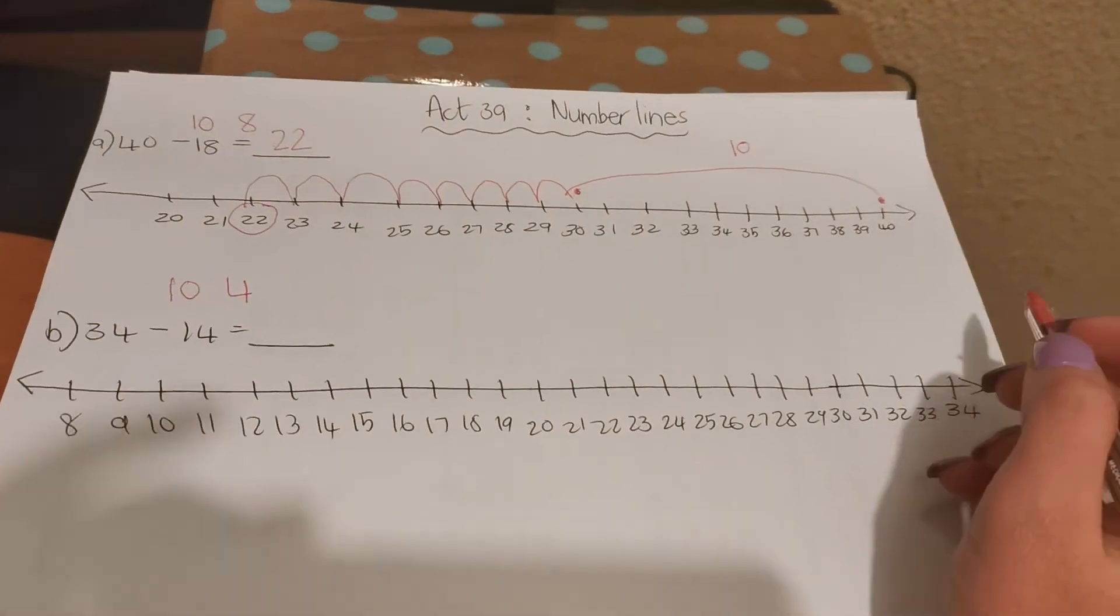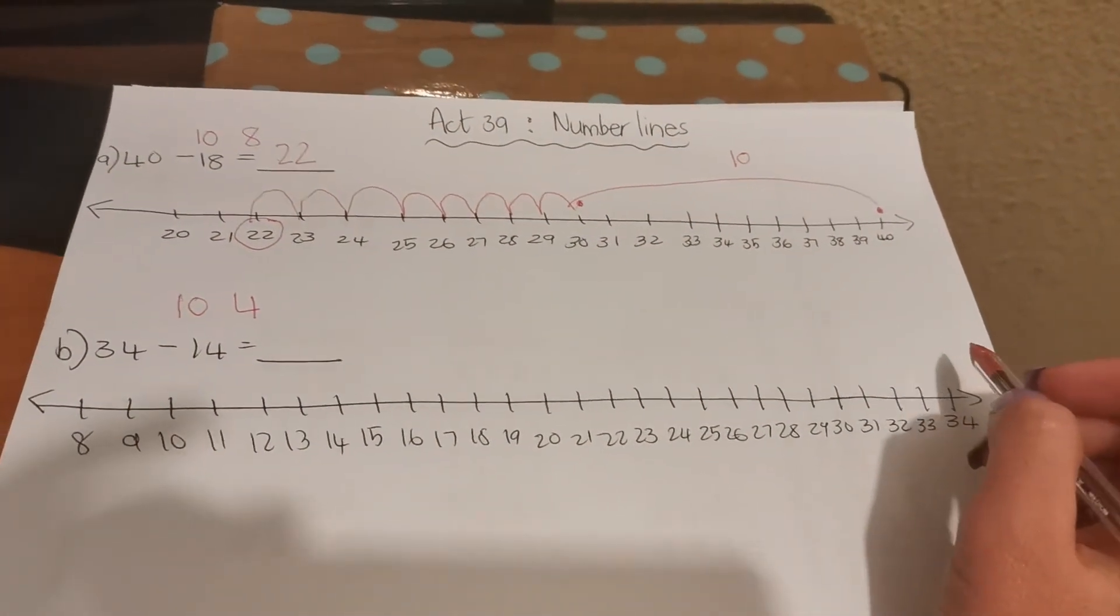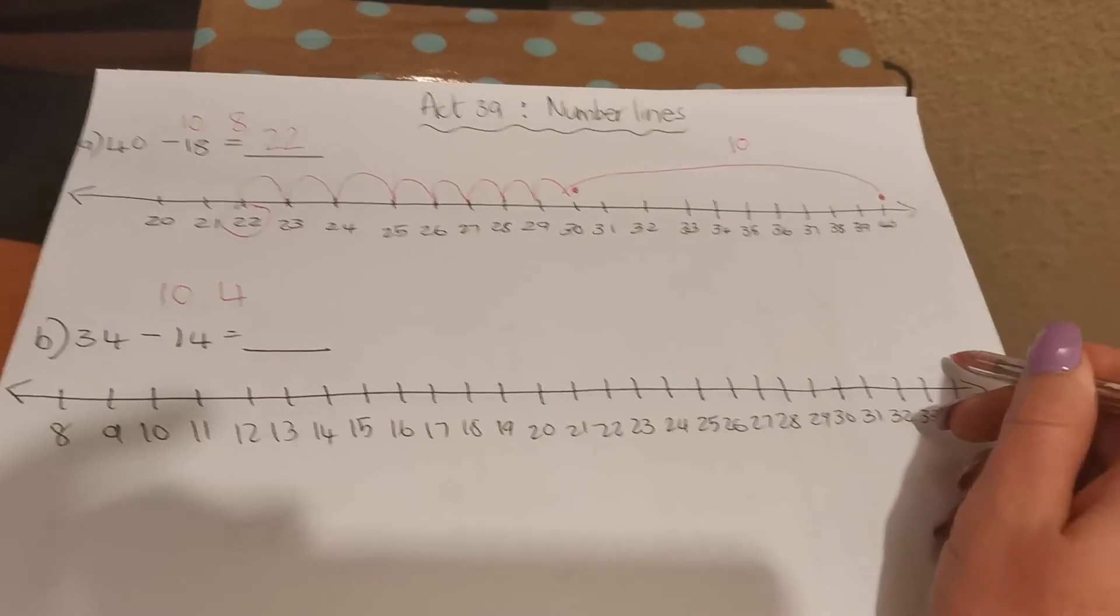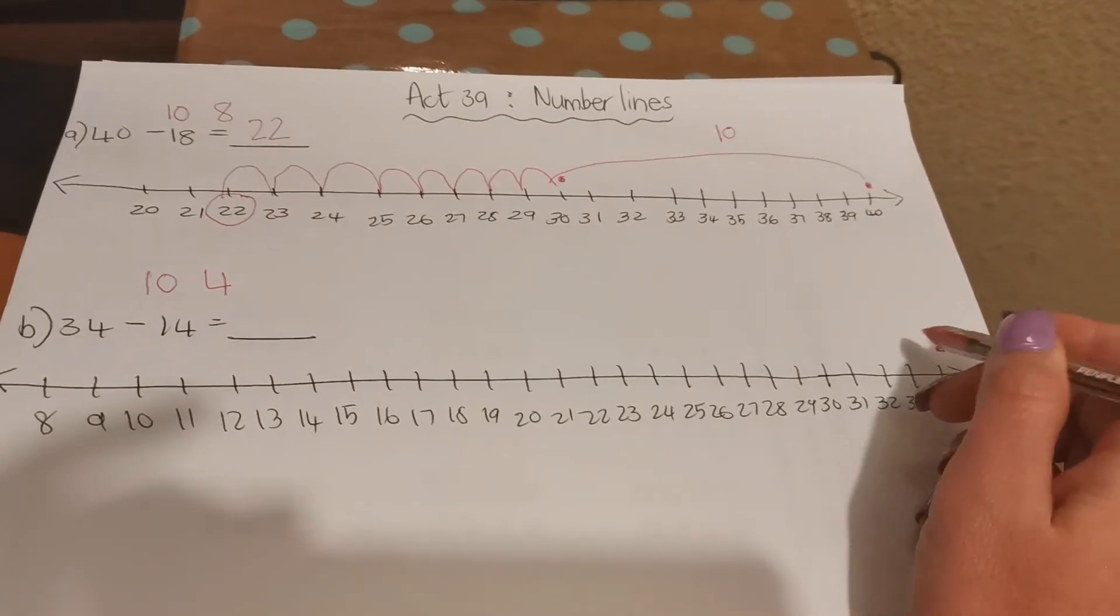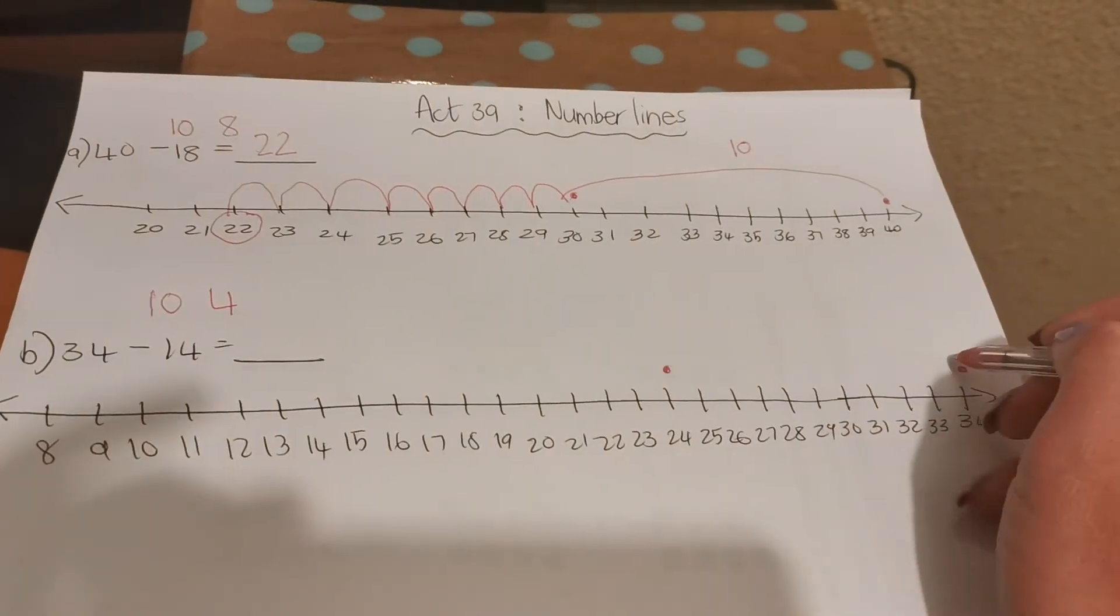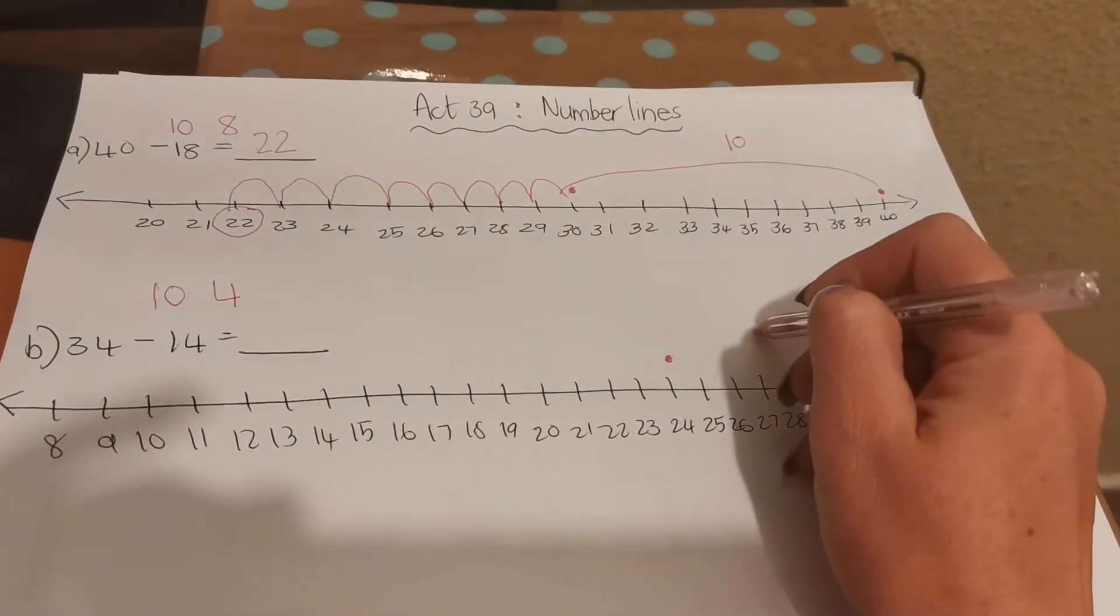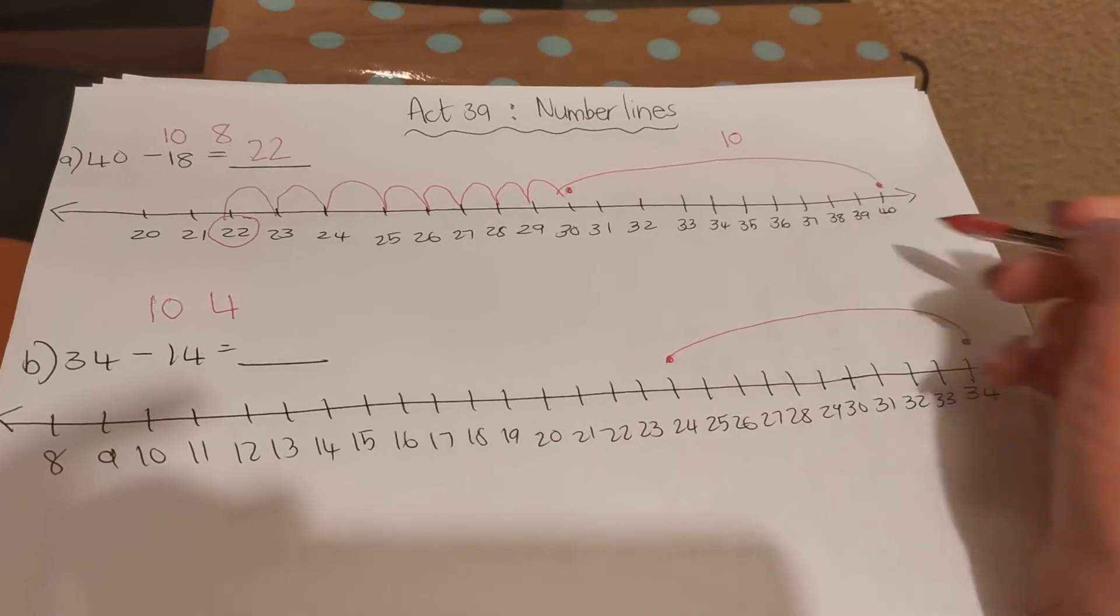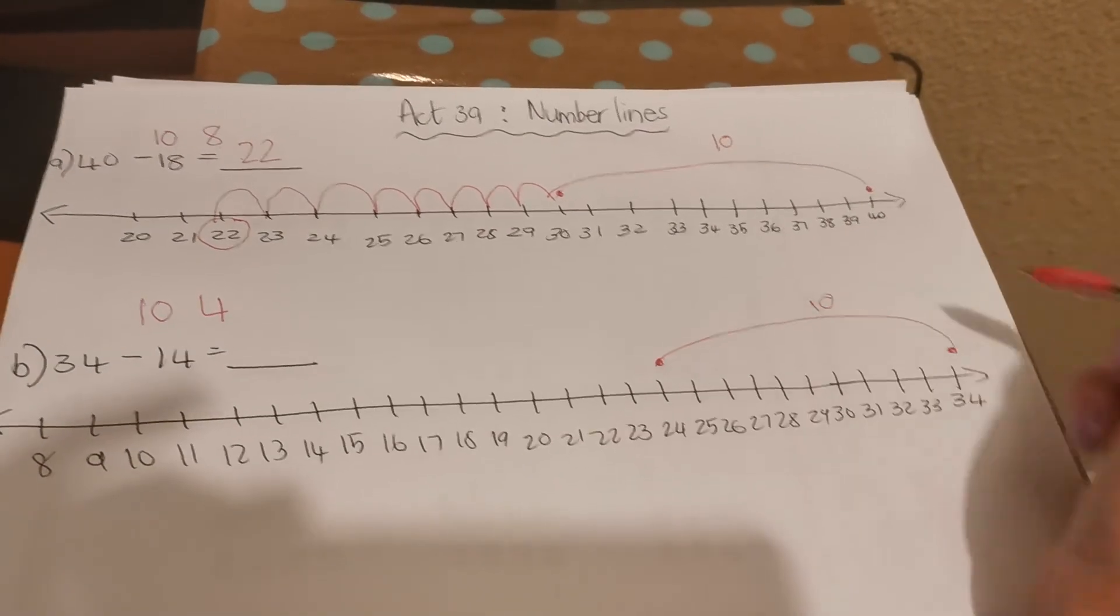So remember if you take away 10, the unit stays the same, just the 10 goes one smaller. So 34 take away 10 will be 24. So you can make the dots and then you can jump nicely from 34 until 24. Then you took away the 10.